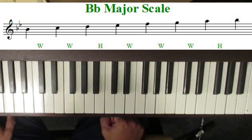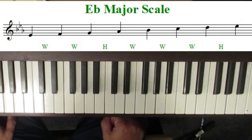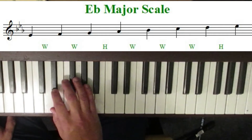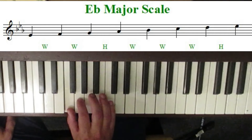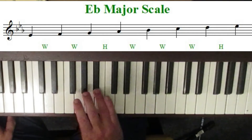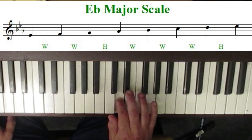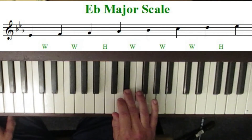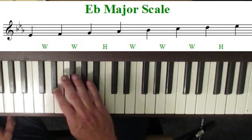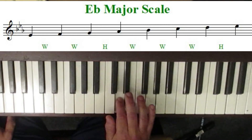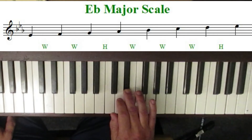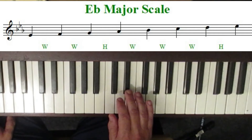Next, let's talk about the scale of E flat major. E flat, whole step to F, whole step to G, half-step to A flat, whole step to B flat, whole step to C, whole step to D, and a half-step to round it off back to E flat. So when you look at the key signature, you can see that the key of E flat major has three flats: B flat, E flat, and A flat.